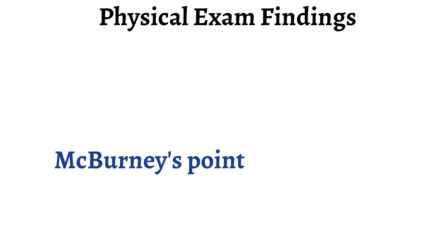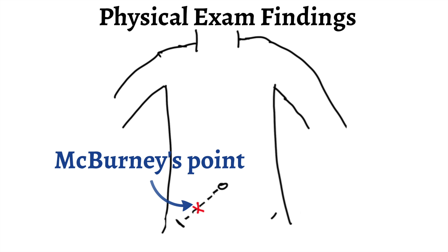The first physical exam sign is called McBurney's point. Imagine drawing a line from the anterior superior iliac spine to your umbilicus or belly button. Locate the anterior superior iliac spine by feeling around your hip — you should feel a bony prominence towards the front of your body. If you travel about two inches from the anterior superior iliac spine toward the belly button along this line, you will identify McBurney's point. Focal tenderness at this point can be indicative of appendicitis.